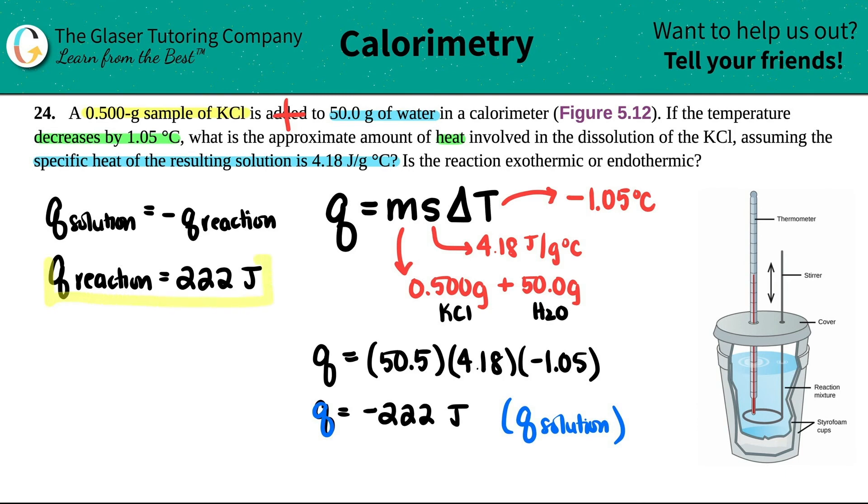So this one was tricky only because of the wording. They never want to find the Q of the solution. They always want to find the Q of the reaction. So it's just quick to just make that mental note and whatever number that you have, just swap the sign.